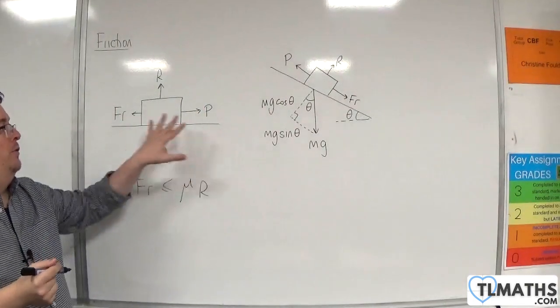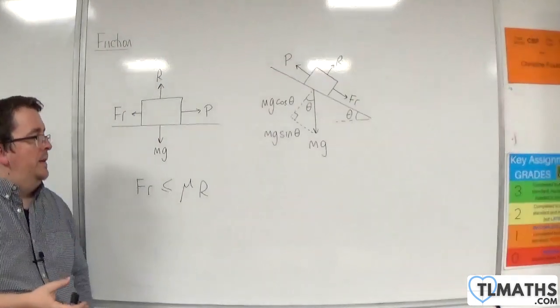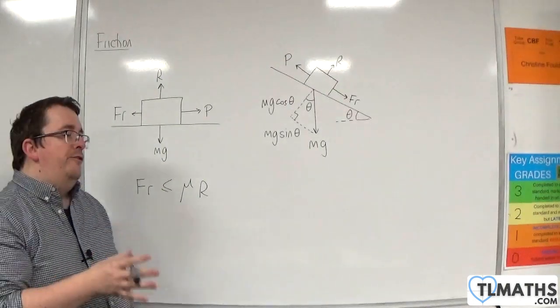And in both these problems, you can utilise, of course, friction is less than or equal to mu R. Now, mu here, remember, is the coefficient of friction.